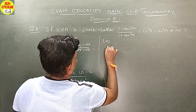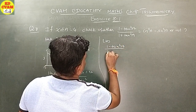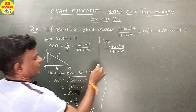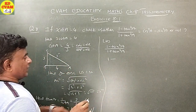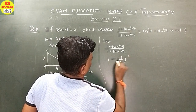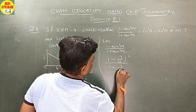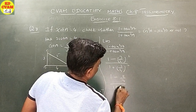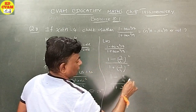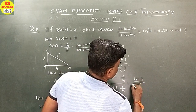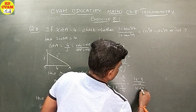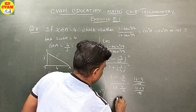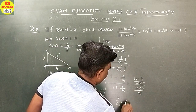LHS equals (1 minus tan squared A) upon (1 plus tan squared A). That is, (1 minus (3 upon 4) squared) upon (1 plus (3 upon 4) squared). Equals (1 minus 9 upon 16) upon (1 plus 9 upon 16). Equals (16 minus 9) upon 16, over (16 plus 9) upon 16. The 16s cancel, giving 7 upon 25.